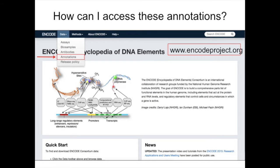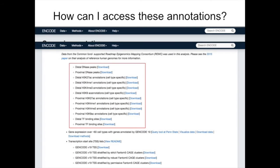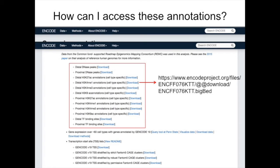The next question is how can you access these annotations? On the ENCODE portal, under the data tab, there's a tab labeled 'annotations.' If you go to that tab, you'll see a brief explanation along with an option to visualize any of these annotations on the UCSC genome browser and WashU genome browser. You can also see a listing of all the tracks and download them locally as BED files, or download them to your local cluster or server.